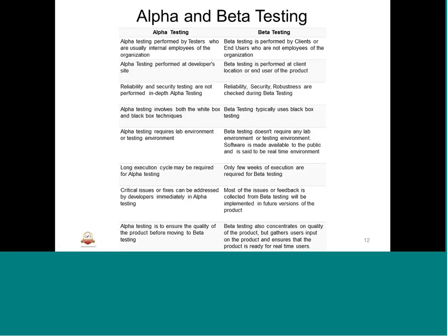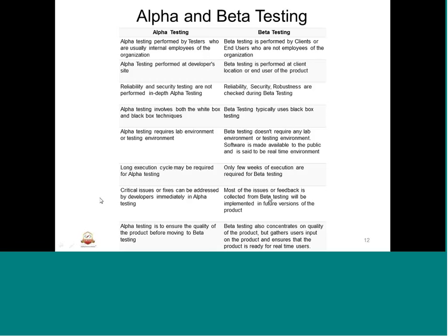Critical issues or fixes can be addressed by developers immediately in alpha testing. Most of the issues or feedback collected from beta testing will be implemented in future versions of the product. In alpha testing, we still have the chance of reverting back with updates of the product; whereas in beta testing it has to go through different implementation version chains and has to be brought back to the factory. Alpha testing is to ensure the quality of the product before going to beta testing. Beta testing also concentrates on quality but also collects user inputs on the product and ensures it is ready for real-time use.